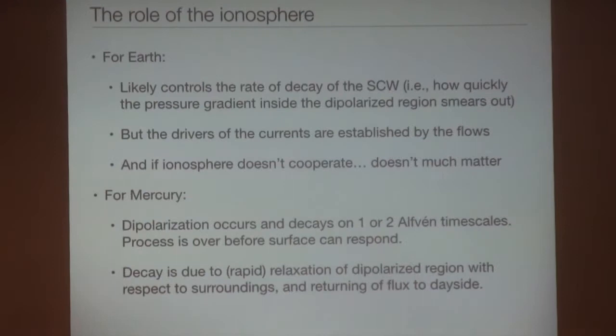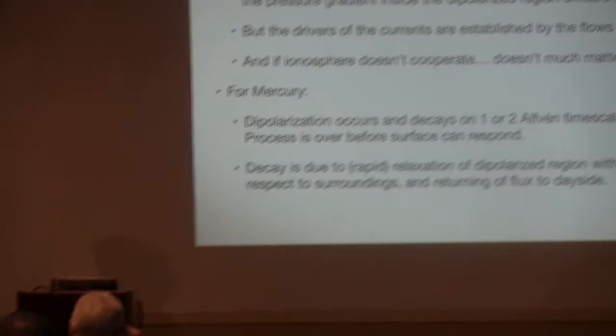So next to the last slide. So what is the role of the ionosphere at Earth? Well, it likely controls the rate of decay of the substorm current wedge. You see that with PI2 pulsations that build up the current, and that current then slowly decays. So the ionosphere is clearly playing a role there. But the drivers of the currents are established by the flows themselves. Magnetosphere establishes the stresses in the magnetosphere that drives the currents. And if the ionosphere doesn't cooperate with that, if it doesn't move plasma to the day side, it really doesn't much matter. Because what happens is the magnetosphere will then just go around that high-pressure region. So in this sense, the ionosphere is kind of a nuisance. But it's there. It's participating and happening. For Mercury, the dipolarization occurs and decays on one or two Alfven timescales. That means that the process is over. This high-pressure dipolarization region has smeared out before the ionosphere could even respond. So it's a bit unfortunate, I think, that things are like that. Because we don't actually get a natural experiment that I was hoping to see of what happens when you get dipolarization without an ionosphere. Because I don't think it actually matters if things are happening so fast.